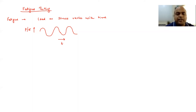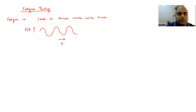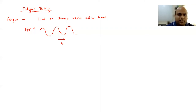Uniaxial tensile loading you rarely observe in reality. There are a few cases, but in most cases whenever you see failure in your surroundings, it's happening because of fatigue loading. In some books you will see 95% of failures happen due to fatigue loading; in some books 90%. So it is a very high fraction.